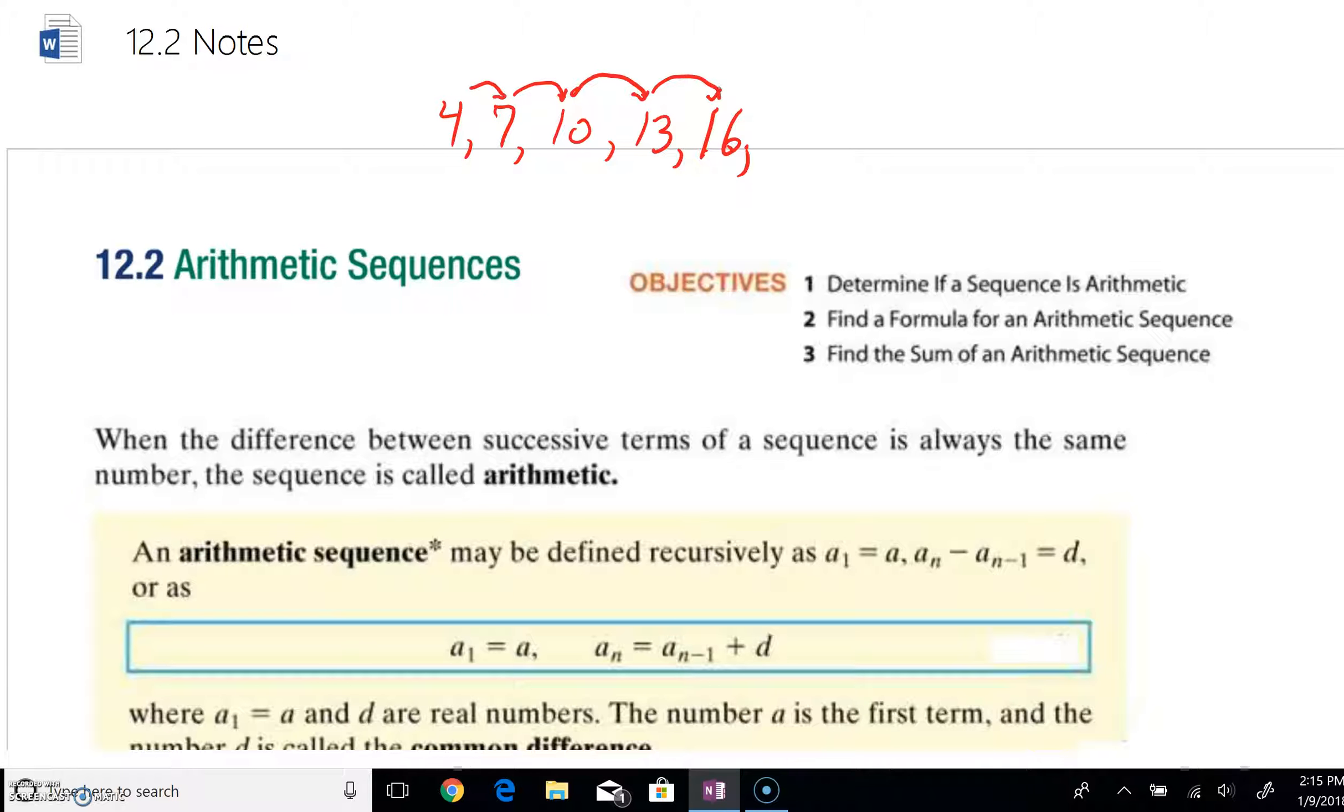Such a pattern is known as an arithmetic sequence. Now, ironically, what we're going to talk about is the difference, the subtraction between successive terms. As you look at 4 and 7, if I were to subtract 7 minus 4, I would get a 3.